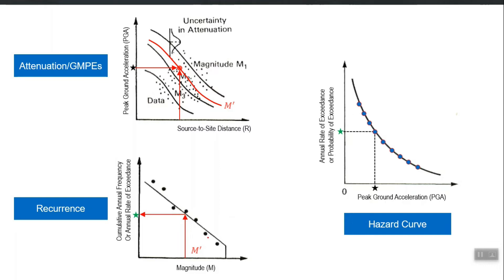Now, the construction of the hazard curve from the M-R relationship and from the GMP. Let us assume that we only have one seismic source and for that we have already constructed its magnitude recurrence. These dots are the actual data points from the past data, the solid line is the best-fit G-R model. This is the relationship between cumulative annual frequency — the third column in that table — which is also called the annual rate of exceedance.